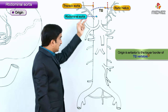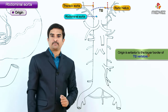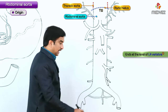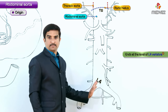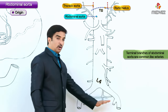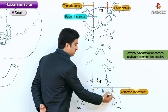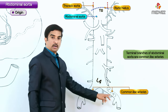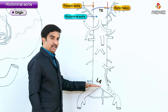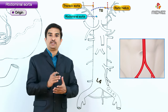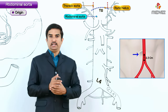The abdominal aorta descends through the abdomen anterior to the vertebral bodies and ends at the level of L4. At L4 the abdominal aorta terminates into its terminal branches, the common iliac arteries. This bifurcation into the two common iliac arteries is the termination of the abdominal aorta.